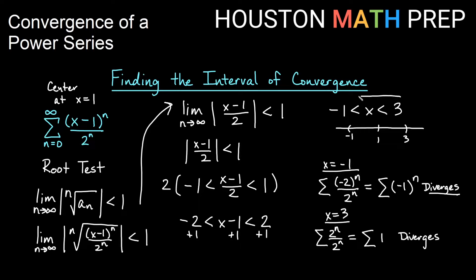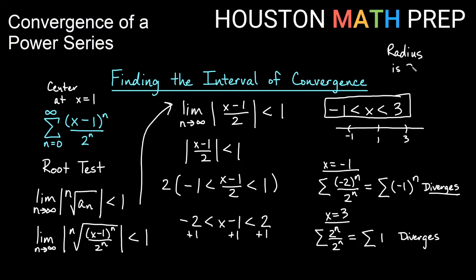If we're asked for the radius of convergence, we can figure that out. How far are these values from the center at 1? Taking 3 minus 1, the radius of convergence is 2 units.